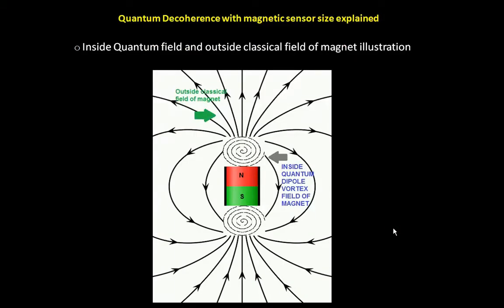In our previous presentation about the misconceptions concerning the ferrolens, we showed that the inside quantum magnet field — which is actually a dipole vortex field, a dipole magnetic flux vortex field — generates the outside field of the magnet. And we say that the ferrolens does not sense the outside field but the inside field of the magnet, which is called the quantum magnet field.